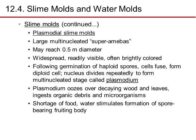Plasmodial slime molds are large multinucleated super-amoebas that can reach a size of 0.5 millimeters in diameter. They are widespread, readily visible, and often brightly colored. Following germination of haploid spores, the cells fuse to form diploid cells, the nucleus divides repeatedly forming a multinucleate stage called the plasmodium. The plasmodium oozes over decaying wood and leaves, ingesting organic debris and microorganisms. Shortage of food and water stimulates the formation of spore-forming fruiting bodies to spread the organism further.